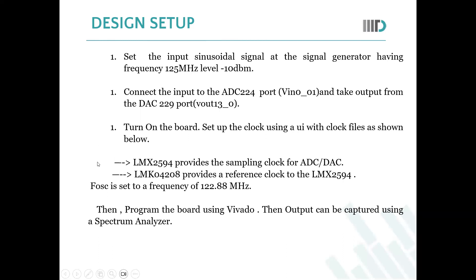In this example, the oscillator is set to 122.88 MHz. We are not going to change this frequency, but through this frequency we are going to convert it to the particular sampling rate required in the design. At the end, we need to program the board using the hardware manager, and then the output can be captured using the spectrum analyzer.